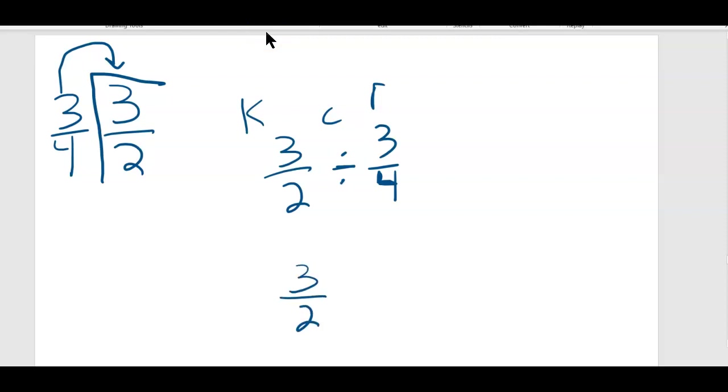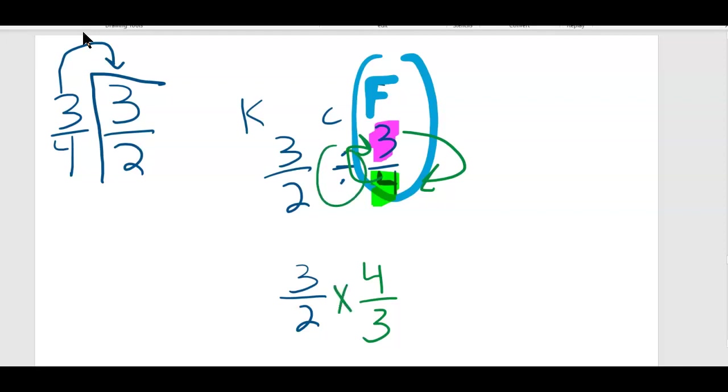three-halves. And we're going to flip this. So either if you do keep change flip or flip the second, we're flipping this. So let's make the top purple for fun and green bottom. Let's flip it so that the three is on the bottom and the four is on the top, like trading places. So four is on the top. The three is on the bottom. And we're going to change the sign. We're going to multiply.